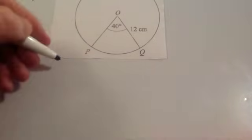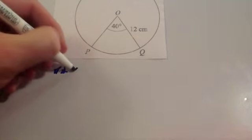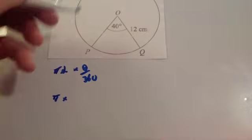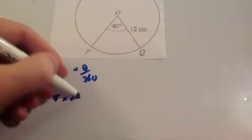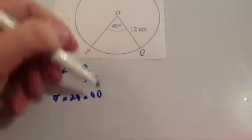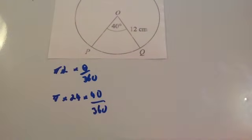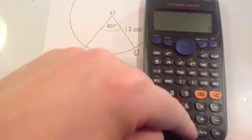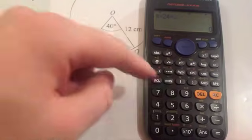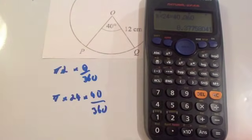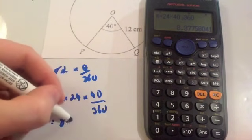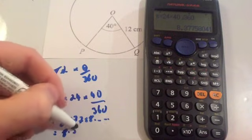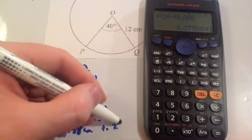So that's from here to here. We're going to use the formula pi times diameter times theta over 360. The diameter of the circle would be 24, times theta which is 40 degrees, over 360. You can just type that into your calculator: shift pi times 24 times 40 over 360. Press equals and you get the arc length equal to 8.37758, so let's round it to 8.38 centimetres to two decimal places.